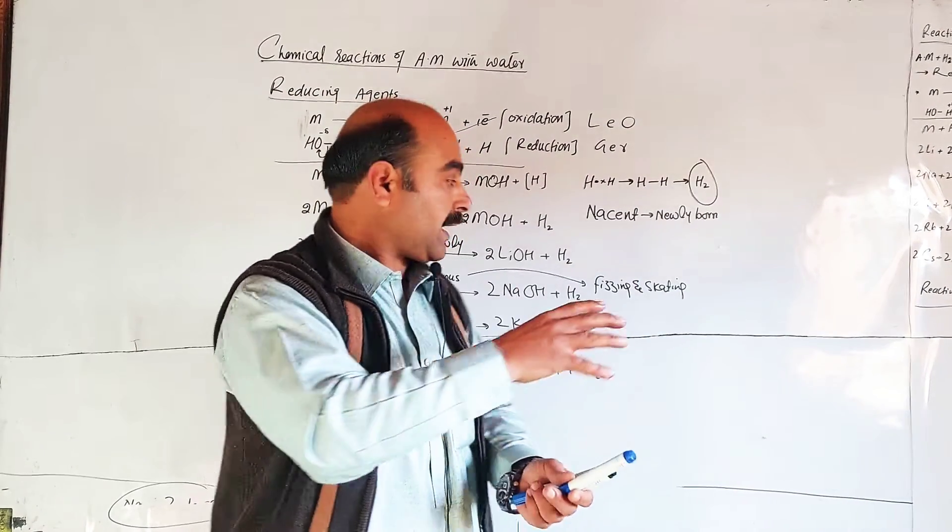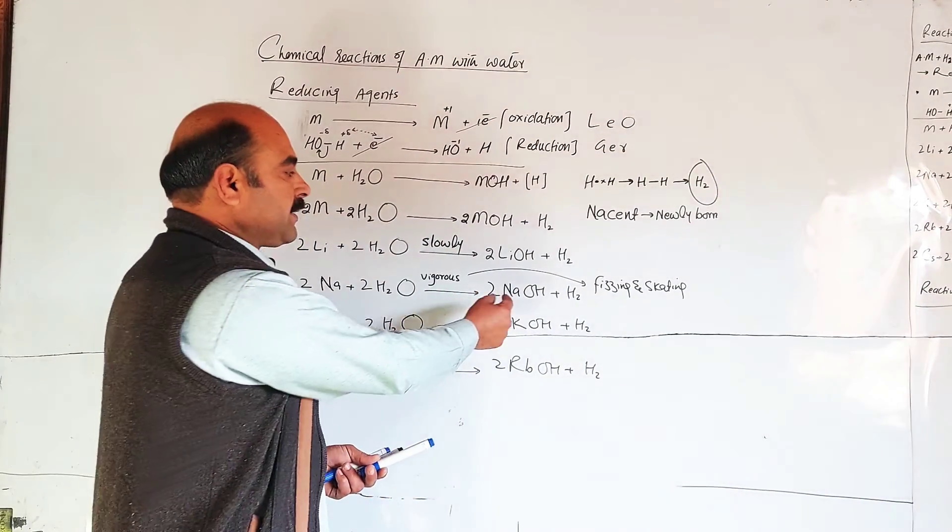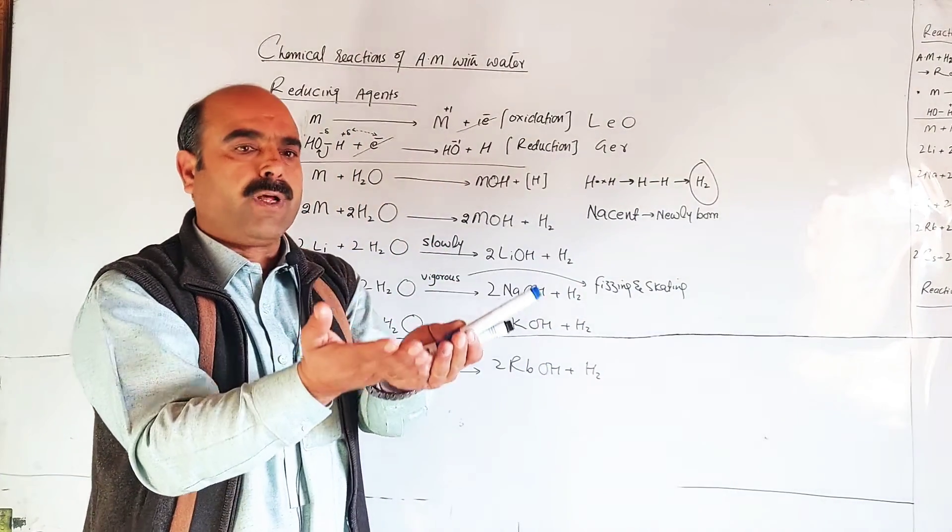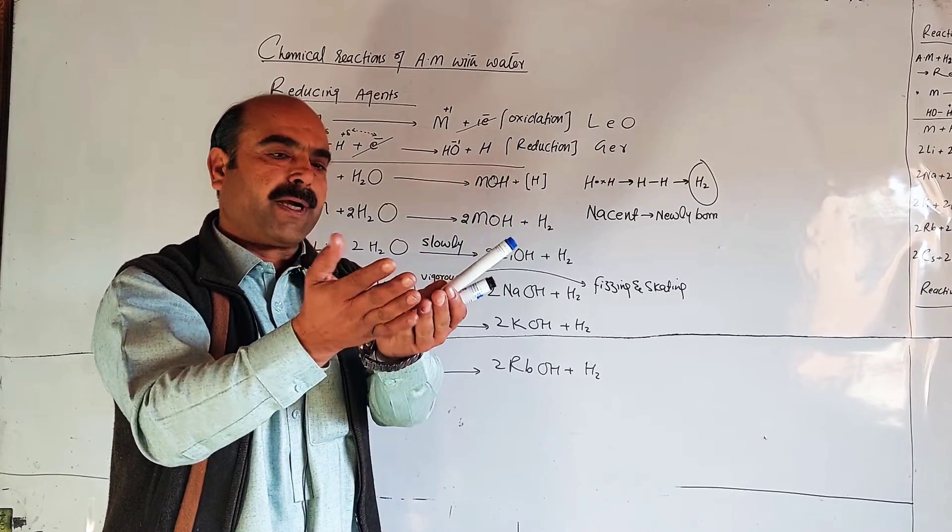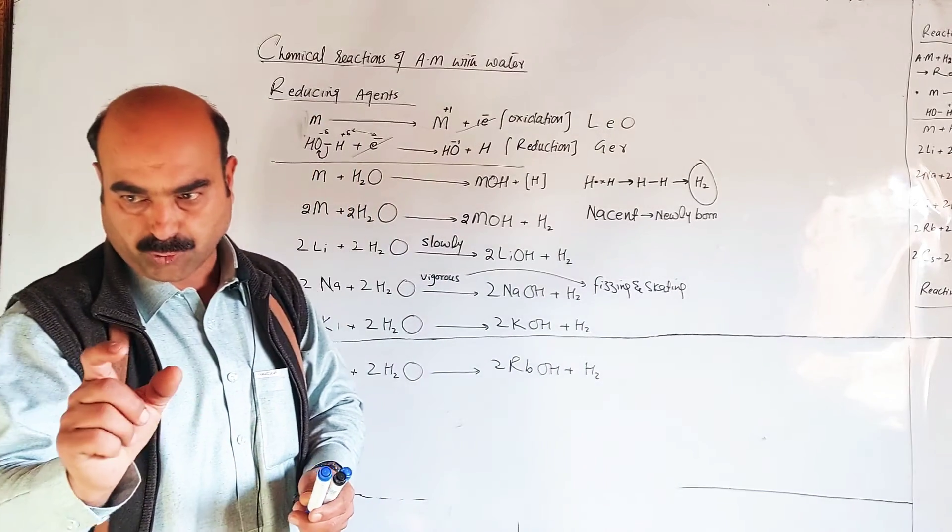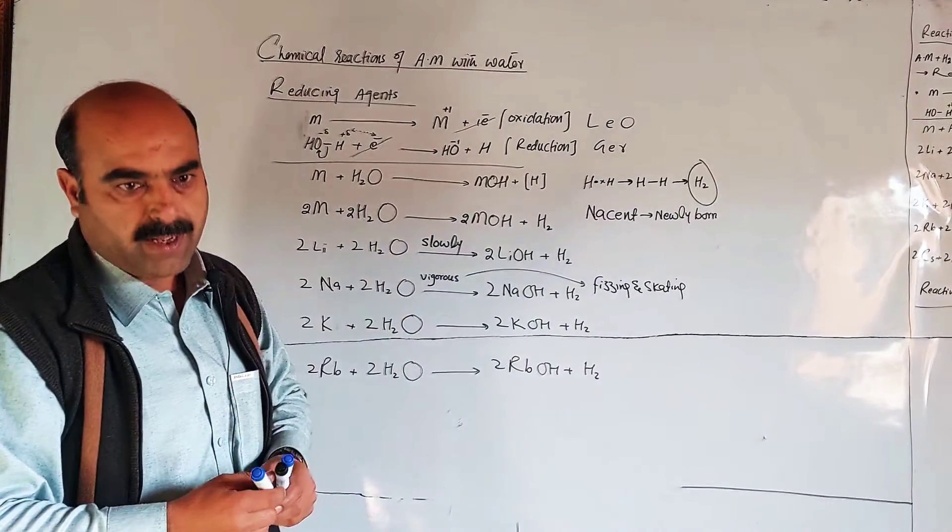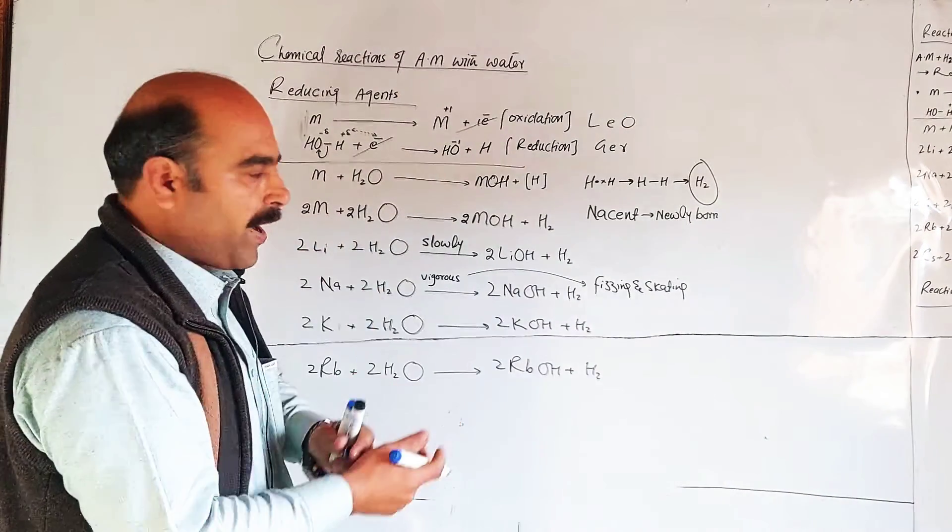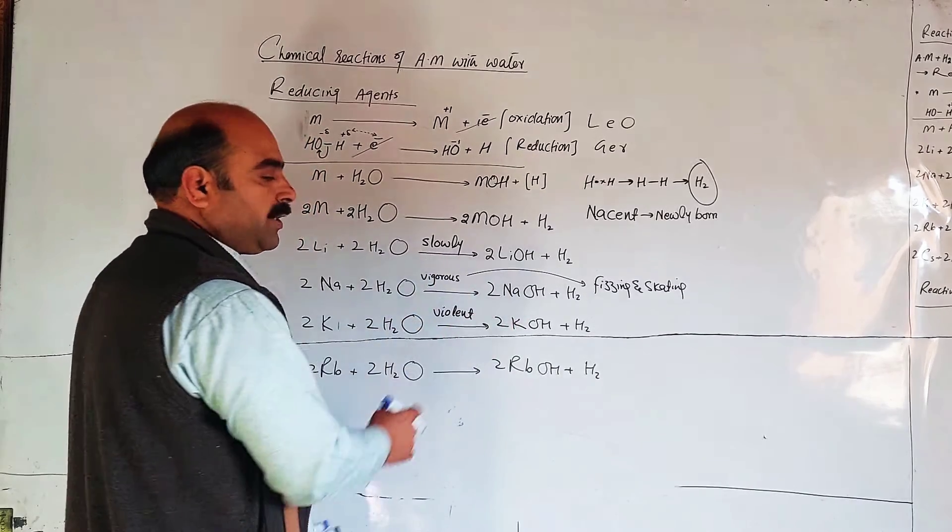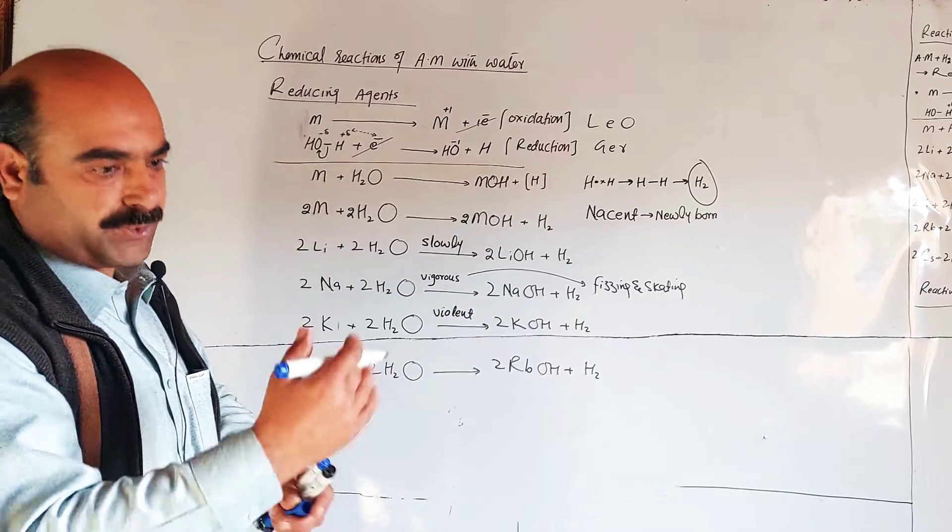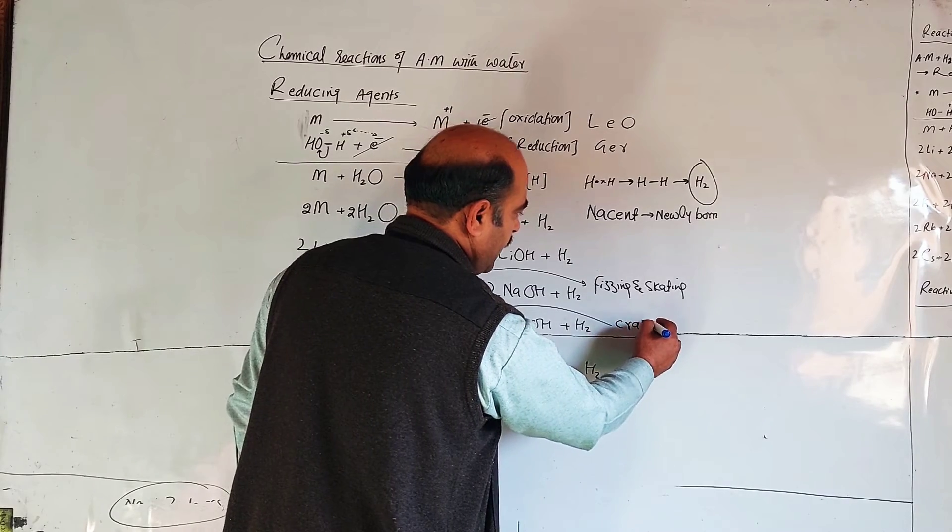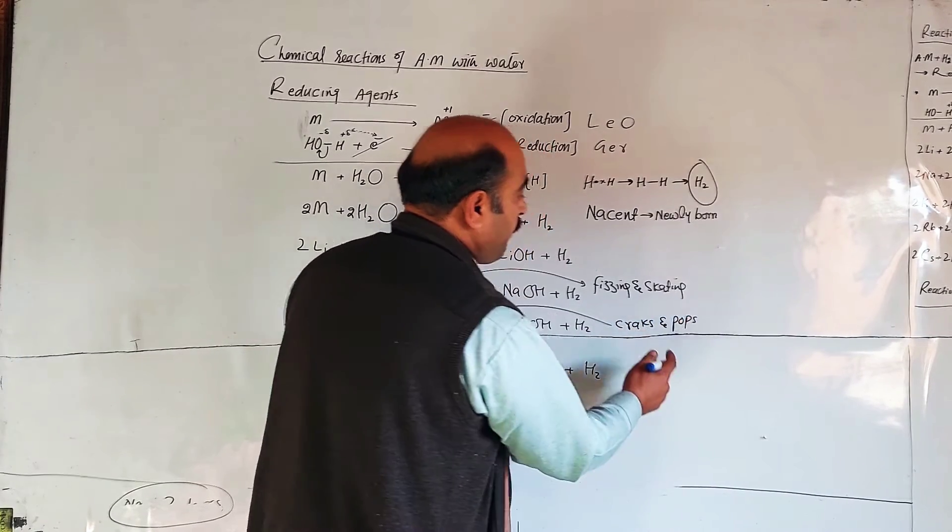Potassium reacts even more violently. Sodium floats on the surface, skating and fizzing with a hissing sound. Potassium reacts very vigorously.